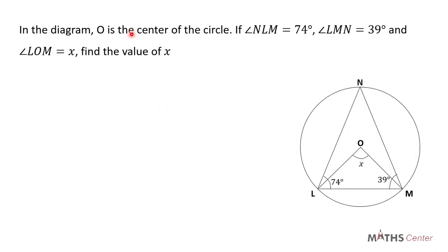In the diagram, O is the center of the circle. If angle NLM is 74 degrees, angle LMN is 39 degrees, and angle LOM is equal to X, find the value of X.